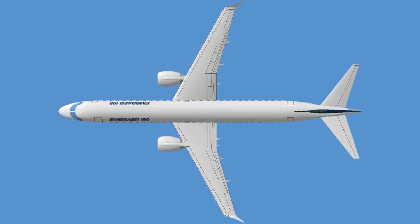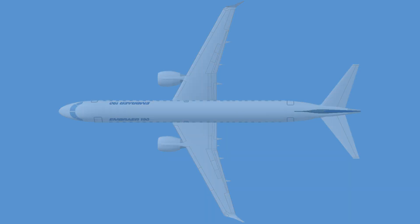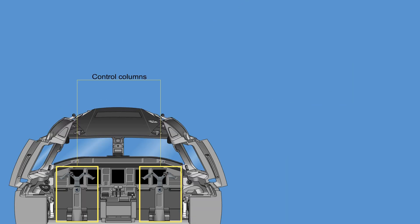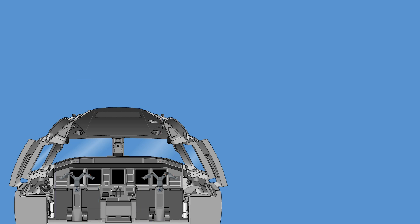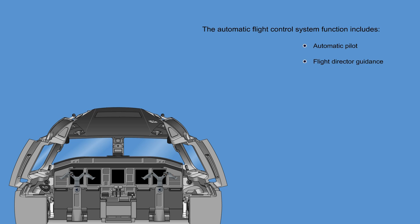The flight guidance control system indirectly drives the primary flight controls through either the cockpit control column or through other processing modules. The automatic flight control system function includes the automatic pilot, flight director guidance, yaw damper, turn coordination, and automatic pitch trim.